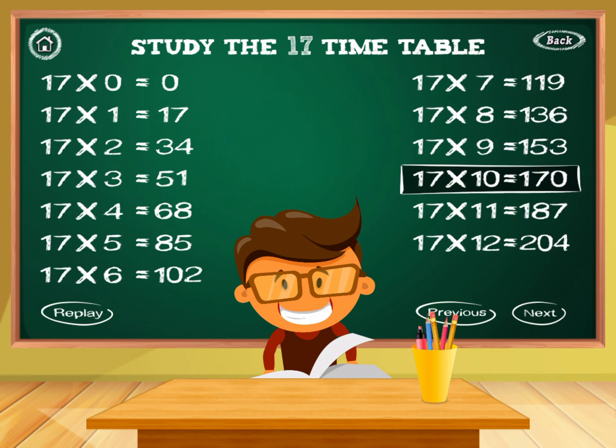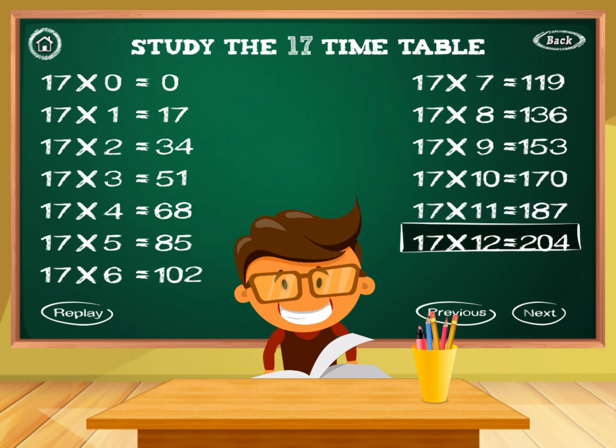17 times 10 equals 170. 17 times 11 equals 187. 17 times 12 equals 204.